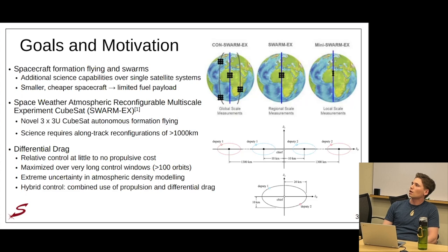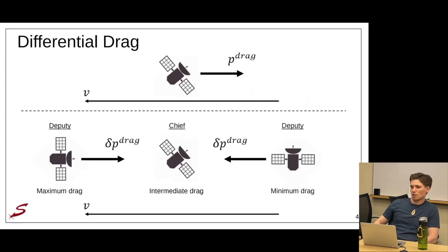So Swarm X is going to use differential drag, which is the difference of atmospheric drag between two spacecraft. This provides relative control between two spacecraft that minimizes propulsive cost as maximized over very long control windows. The main problem here is that there is extreme uncertainty in the atmospheric density modeling at pretty much any altitude, and this also becomes exacerbated over these very long control windows. Using differential drag and propulsion together introduces the concept of hybrid control, which is the combined use of propulsive and differential drag within the same control window.